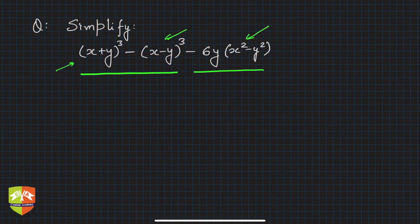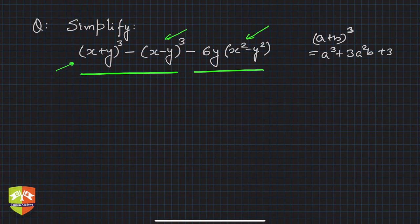You deploy the identities. What identities? (a+b)³ is a³ + 3a²b + 3ab² + b³. This is one way of doing it - repeat the process for all three terms.